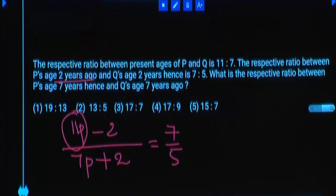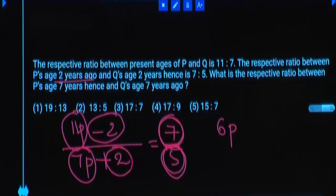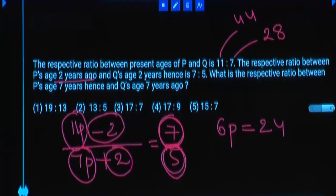Cross multiply: 11 times 5 = 55 parts, 7 times 7 = 49 parts. Difference is 6 parts. Minus 2 times 5 = minus 10; 7 times 2 = 14. Minus 10 moves to the right side, becomes plus 10. 14 plus 10 = 24. If 6 parts equals 24, then 1 part equals 4. So 11 parts = 44 and 7 parts = 28. Present ages are 44 and 28.